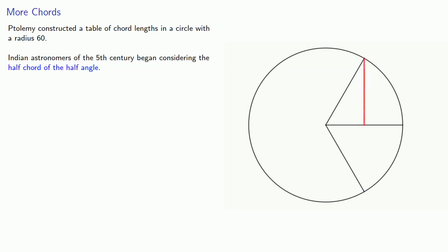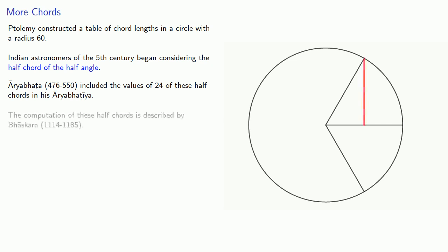The earliest documented appearance is in the work of Aryabhata. Aryabhata included the value of 24 of these half-chords in his Aryabhatiya. Aryabhata himself did not describe how he found these values, but the computation of these half-chords is described by Bhaskara in the 12th century.